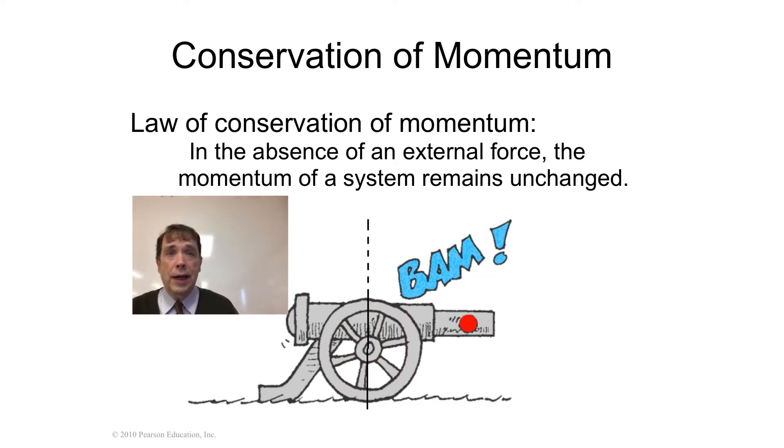So at that moment, the ball has a momentum. The cannonball is going towards the right at a certain speed. But what is true also is that that cannon is going to kick. I don't know if you shoot a gun, but your gun will kick, and some guns kick worse than other guns. So what's actually happening?